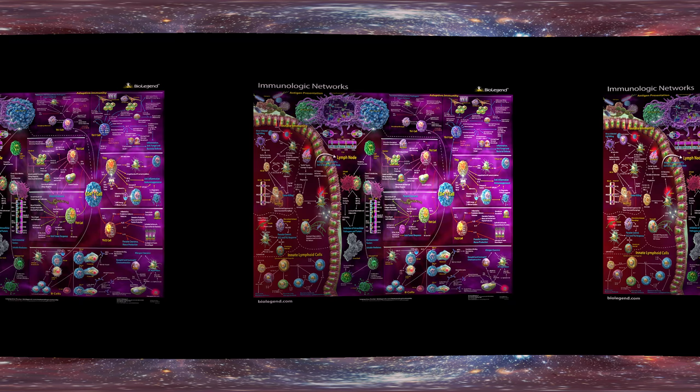Our revamped and upgraded Immunological Networks poster gives you an overview of some of the most important aspects of immunology. The poster starts by dividing the topics into two main categories: innate immunity on the left and adaptive immunity on the right.